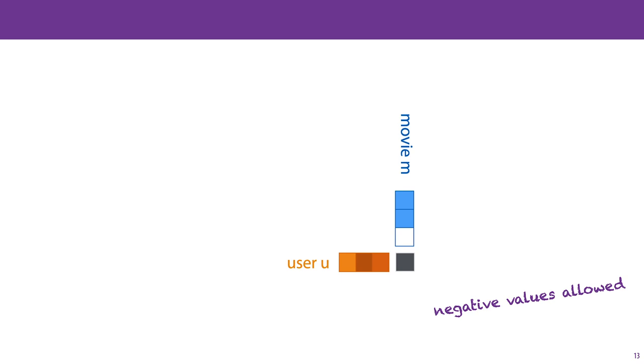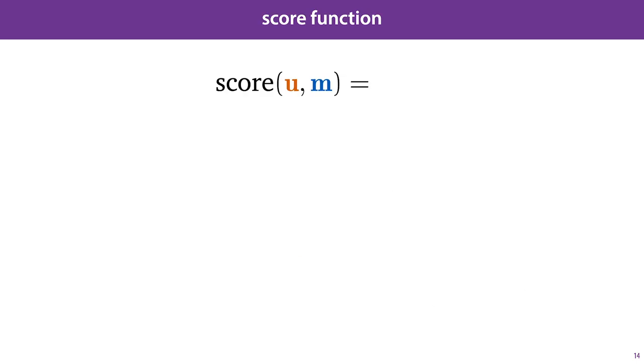In that case, we can imagine setting the values by hand to represent various aspects for the users and the movies that match each other. We might, for instance, encode in one feature how much a user likes romance, which we can make negative for a strong dislike of romance, and positive for a strong affinity for romance, and we could then encode in the corresponding movie feature how much romance the movie contains.